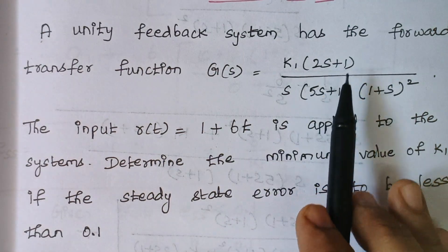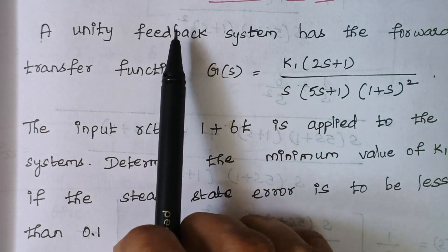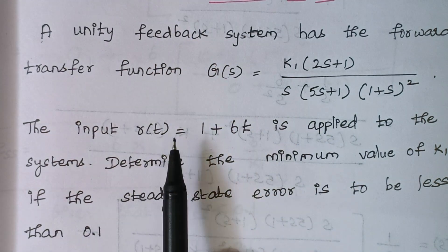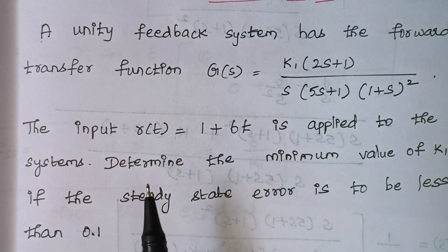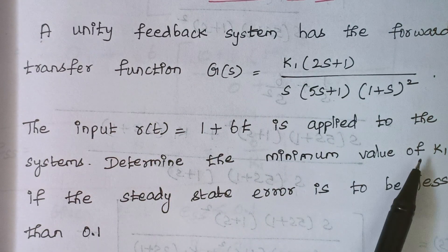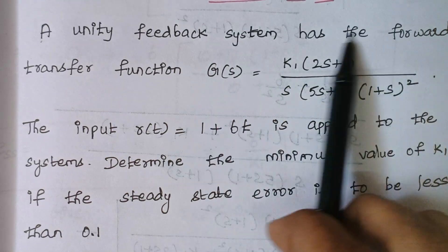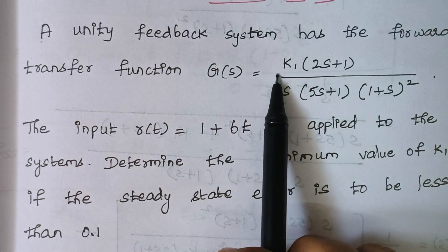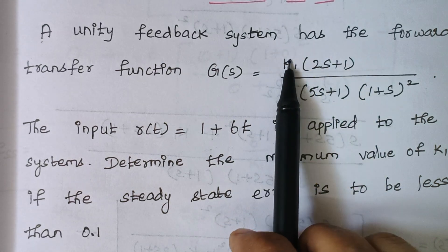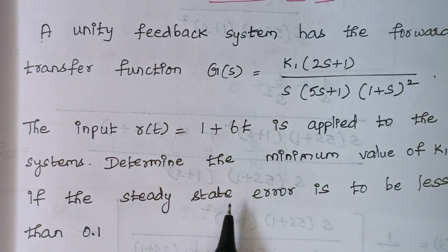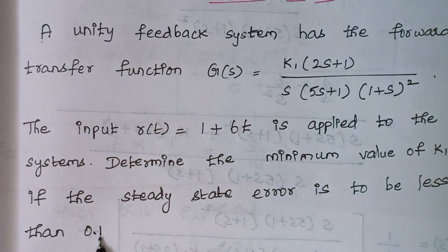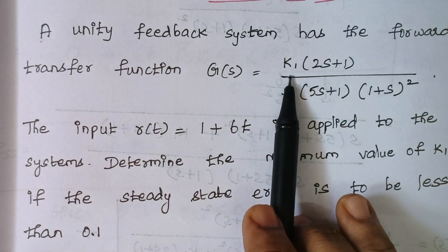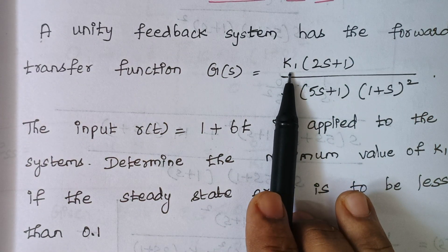The value of G(s) is given, the type of feedback is unity feedback, and the value of r(t) is given. We are asked to find the value of k1, which is a constant in G(s). They are asking us to find k1 given that the steady state error should be less than 0.1 — that is, they give the steady state error and ask us to find the constant present in G(s).